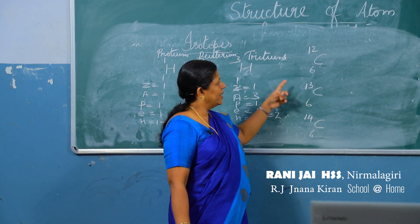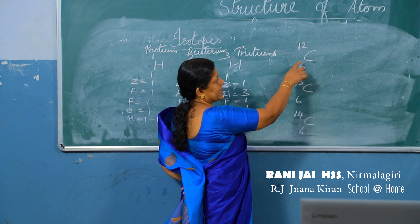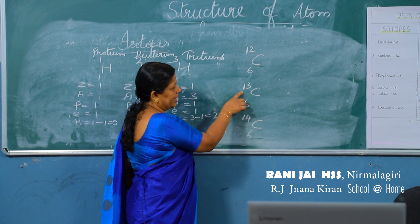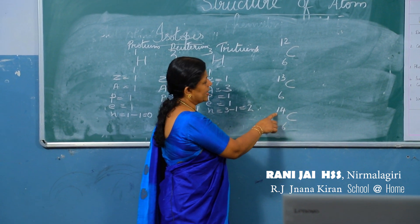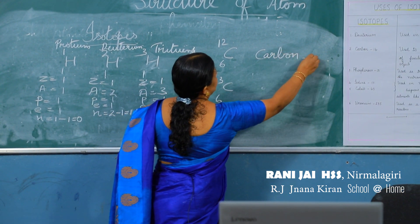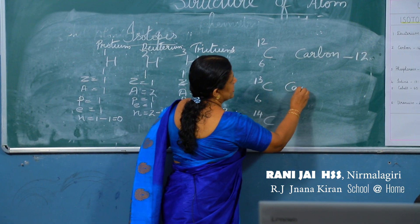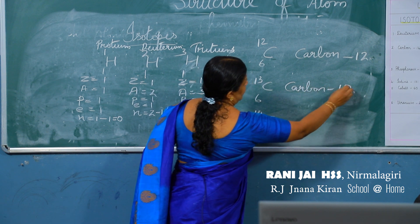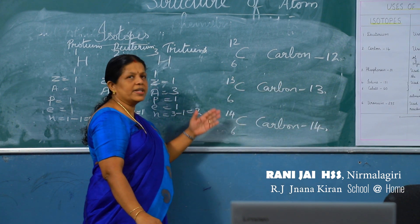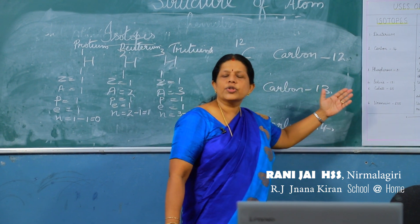Now let us see how we represent isotopes. Here are the isotopes of carbon: carbon with atomic number 6, mass number 12; carbon atomic number 6, mass number 13; and carbon atomic number 6, mass number 14. We represent them by writing the element name and the mass number: carbon-12, carbon-13, and carbon-14.